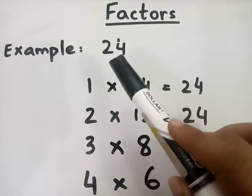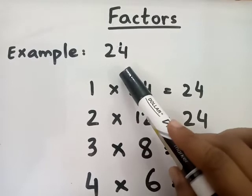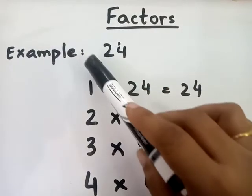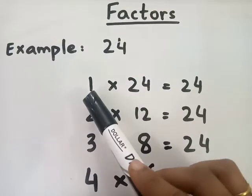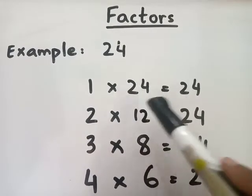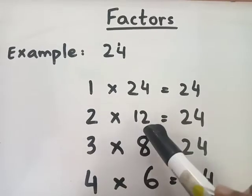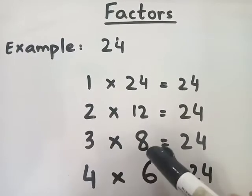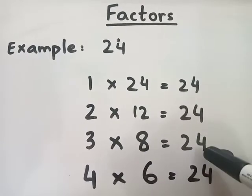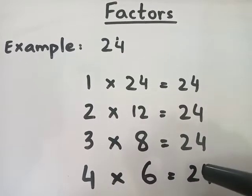You can see here a number 24, right? So we can find out all the factors of 24. How? You can see here. 1 multiplied by 24 is equals to 24. 2 multiplied by 12 is equals to 24. 3 multiplied by 8 is equals to 24. Then 4 multiplied by 6 is equals to 24.